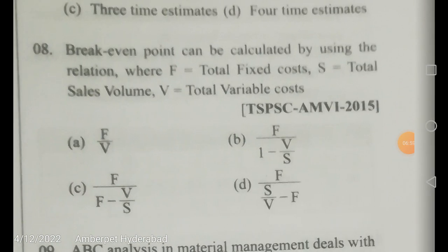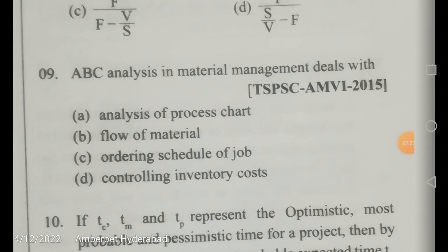The break-even point can be calculated using: F = total fixed cost, S = total sales volume, V = total variable cost. The formula for break-even point is F divided by (1 − V/S).